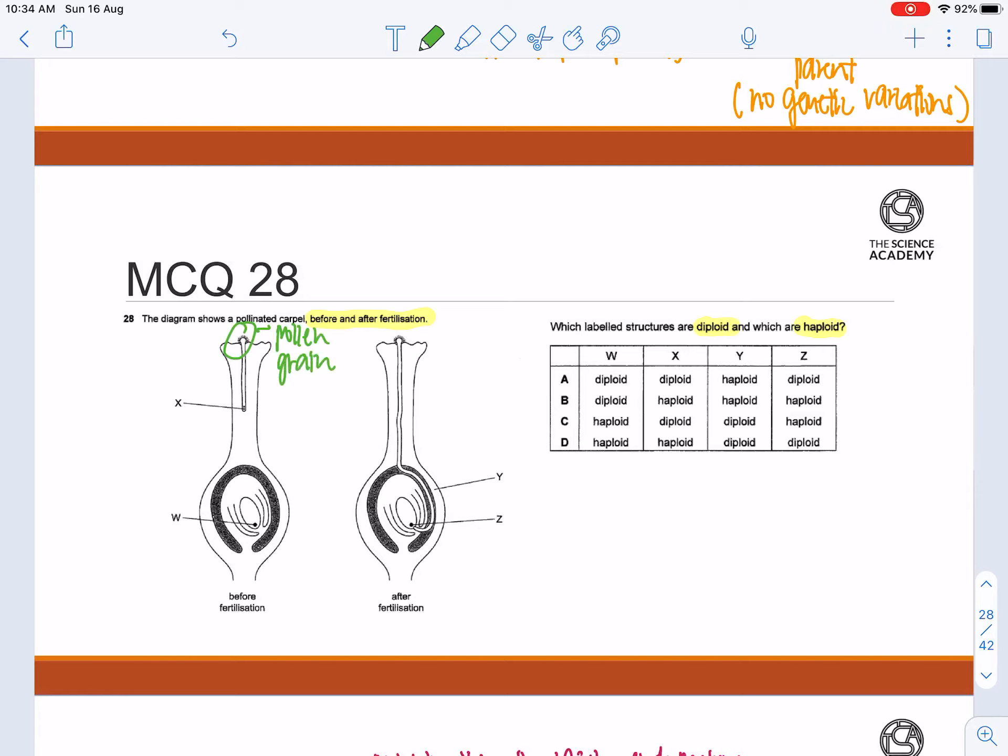After it landed on the stigma, it will form a stalk in which the male gametes will travel down.